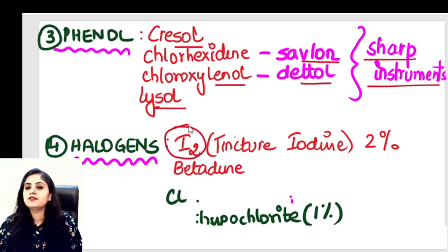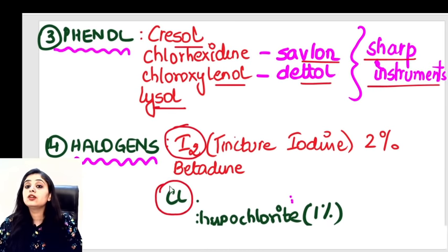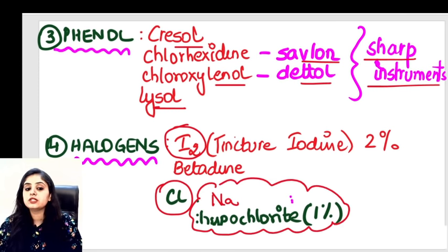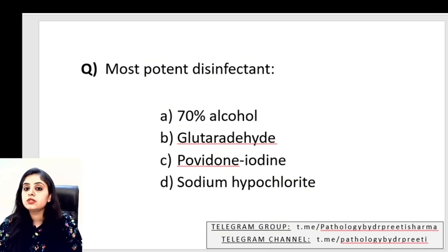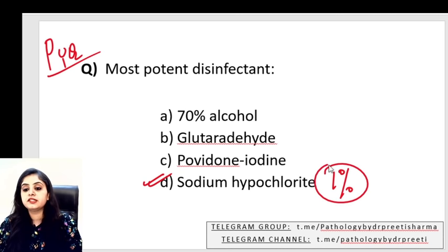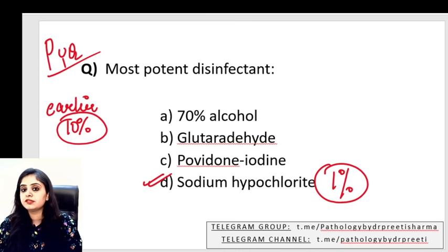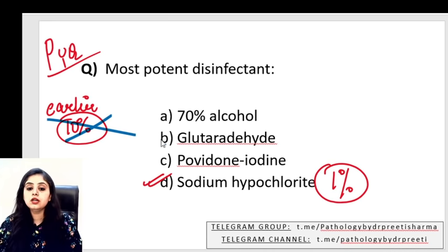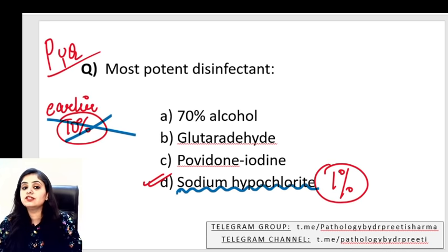Halogens include iodine — tincture iodine and betadine (the brownish colored solution) — and chlorine compounds. The most important is sodium hypochlorite 1%. This is a previous year question from FMG and NEET PG: the most potent disinfectant out of alcohol, glutaraldehyde, iodine, or sodium hypochlorite? The answer is sodium hypochlorite 1%. Earlier recommendations said 10%, but current recommendations say 1%. If you spill blood on the floor, use 1% sodium hypochlorite.